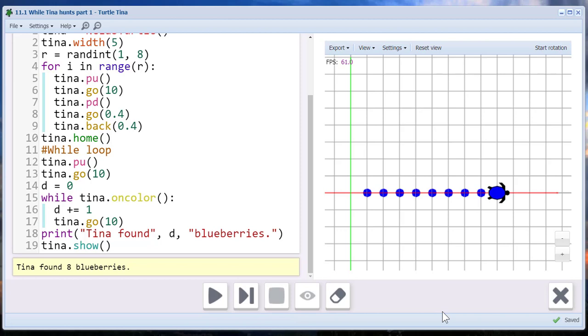Our while loop iterates as long as Tina's test for on color is true. It stops the first time that the test is false. What happens if we never trigger a false evaluation? Let's comment out our pin-up line and see what happens. Without that pin-up line in there, Tina's going to keep drawing a line and we would predict that she will never get out of the loop because she will always be on color.